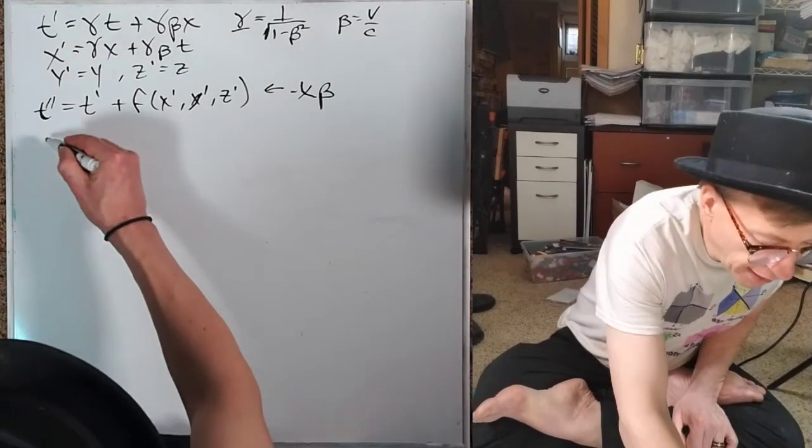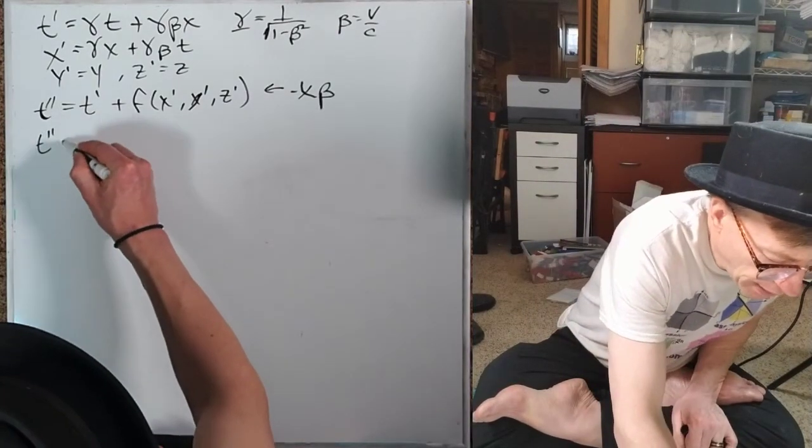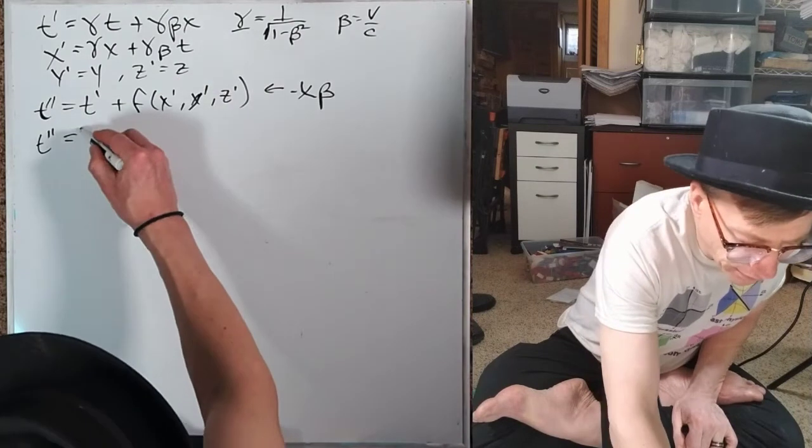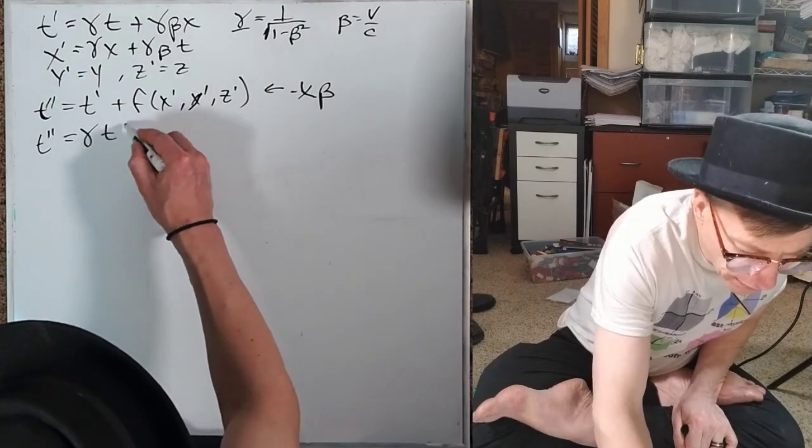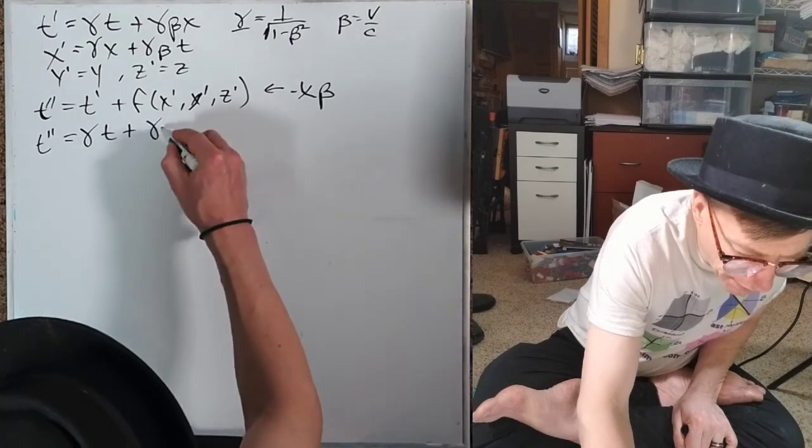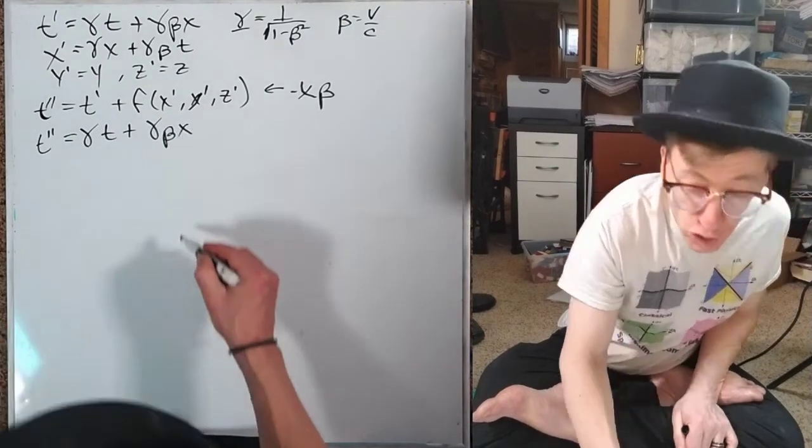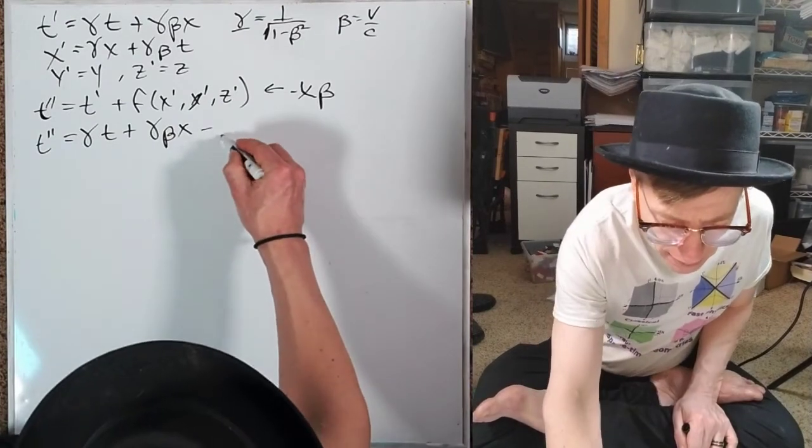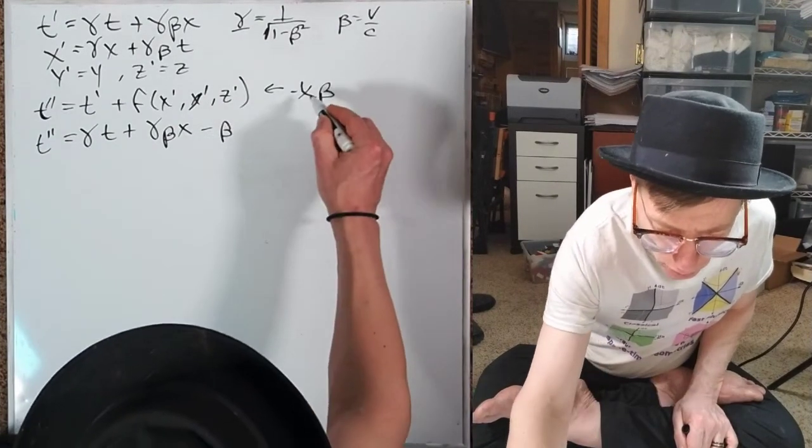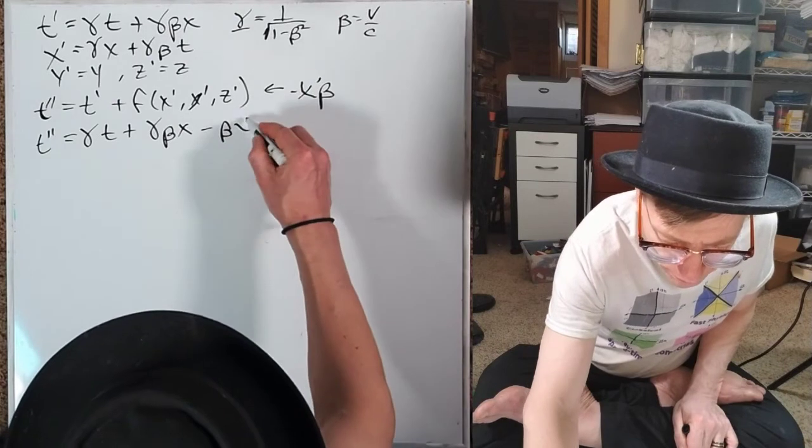So now I just plug and plug away. So I said t'' = t'. That's that first line, the γt + γβx. No need to alter a thing. And then we're going to do minus β, this is x' x'. And it's not good to have unprimed and primed in the same expression there.